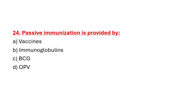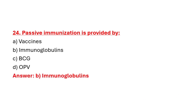Question 24: Passive immunization is provided by. Option A: Vaccines. Option B: Immunoglobulins. Option C: BCG. Option D: OPV. Correct answer is Option B: Immunoglobulins.